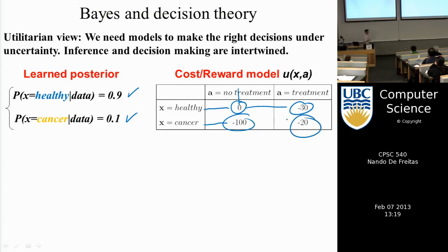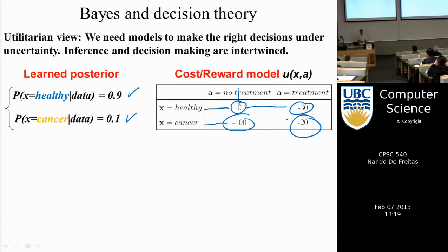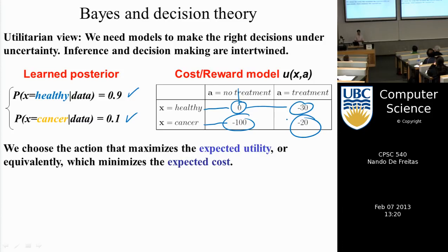The utilitarian view is to maximize costs weighted by their probability. To choose the best action, you weight the cost of each action by the probability of the corresponding state. For example, the expected utility of treatment equals utility(healthy, treat) × P(healthy | data) + utility(cancer, treat) × P(cancer | data). Plugging in: (-30)(0.9) + (-20)(0.1), giving a number I leave as an exercise.